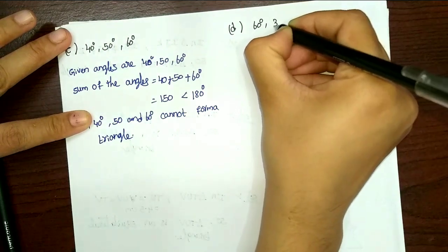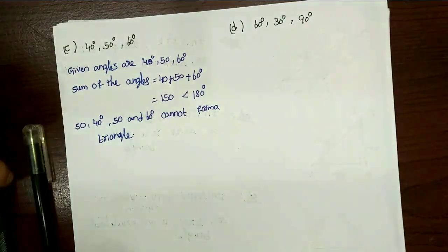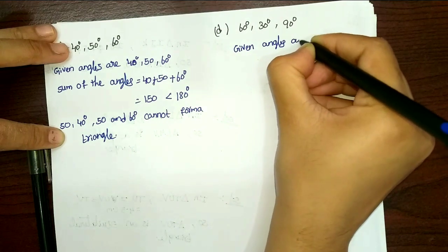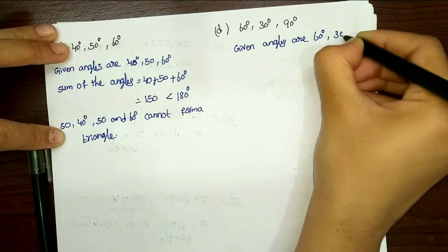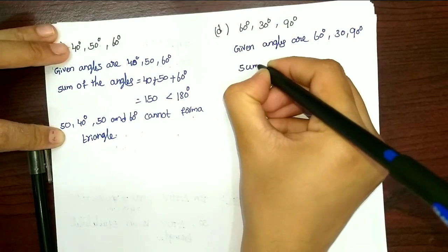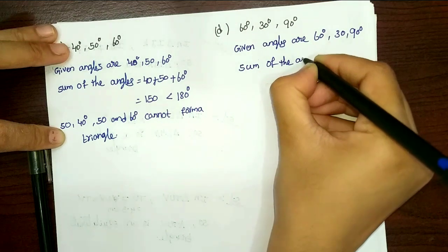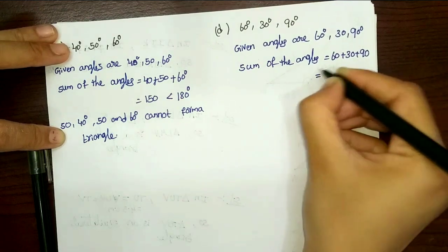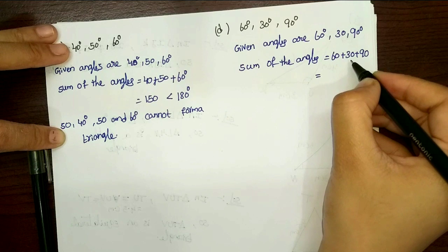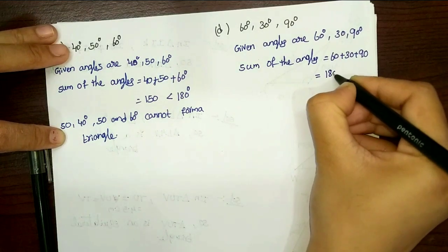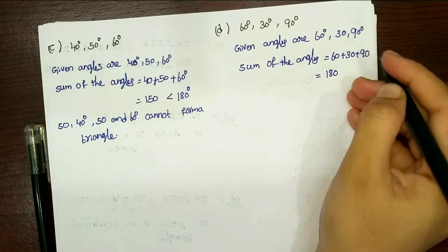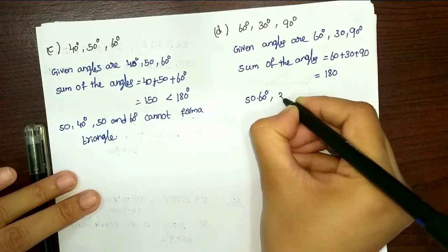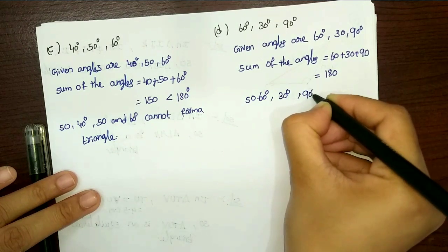Part (d): given angles are 60 degrees, 30 degrees, 90 degrees. Sum of the angles: 60 plus 30 plus 90. So 60 plus 30 is 90, and 90 plus 90 is exactly 180. So 60, 30, and 90 can form a triangle.